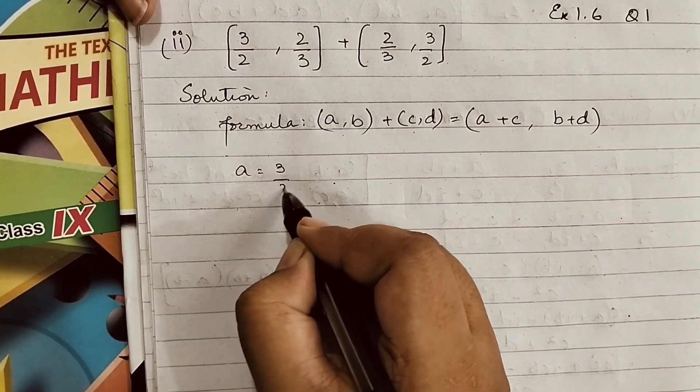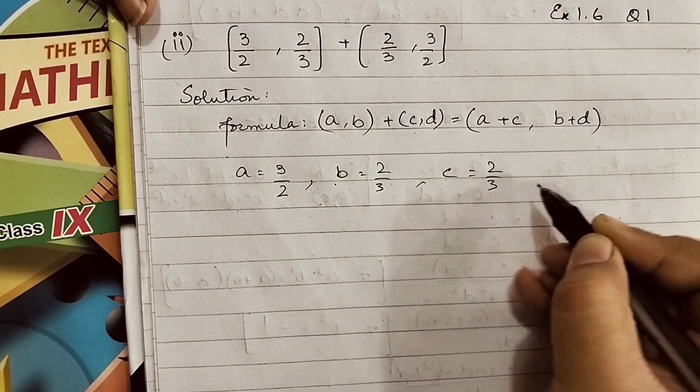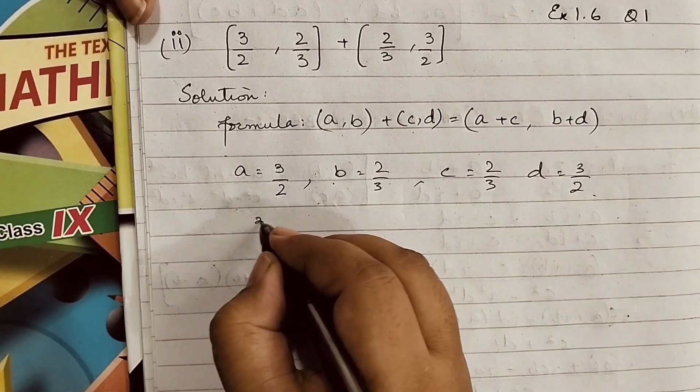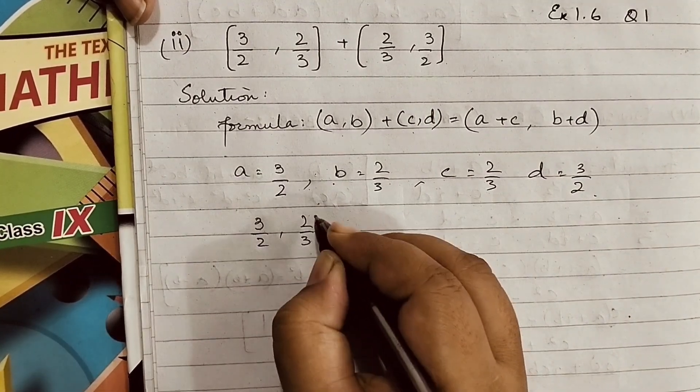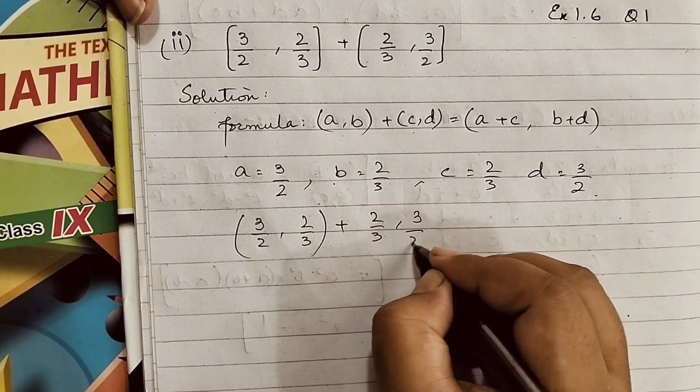Here, a equals 3/2, b equals 2/3, c equals 2/3, and d equals 3/2. So the numbers become (3/2, 2/3) add (2/3, 3/2). We get,